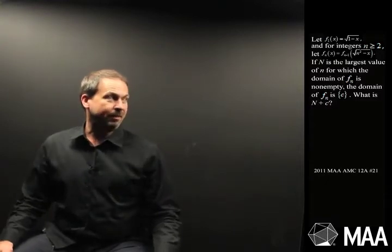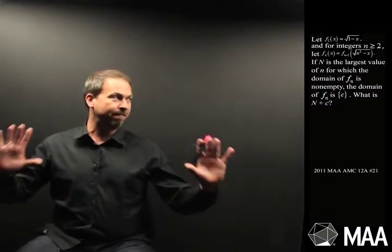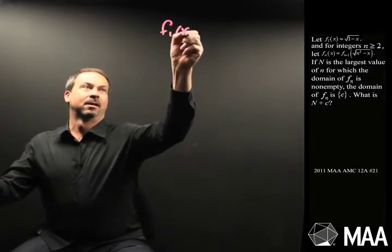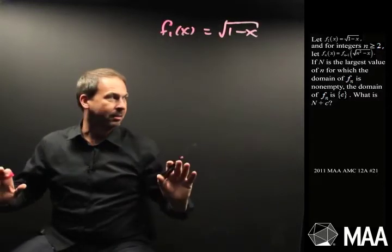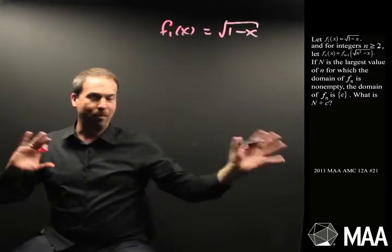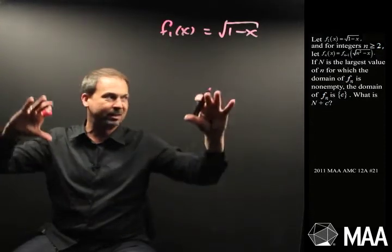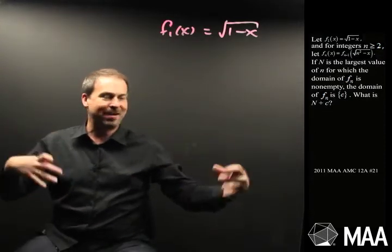Alright, there's a lot of stuff going on here, let me just see if I can step back from this. I can see formulas for functions—in fact I've got one function f1 of x, okay I can handle that, the square root of 1 minus x. And then some complicated formula, I won't bother reading the details right now, but it tells me how to get the next function from a previous one, like fn of x is f(n-1) of something else.